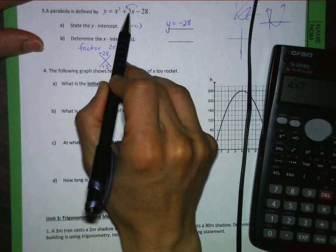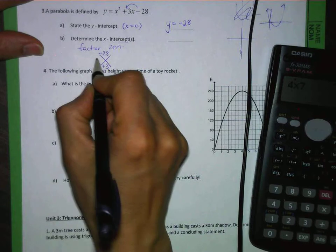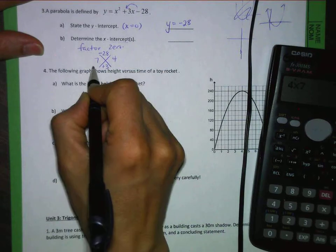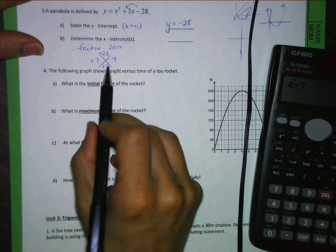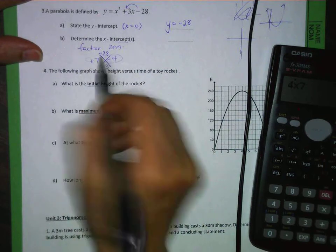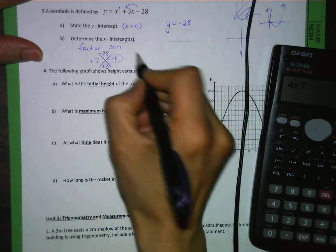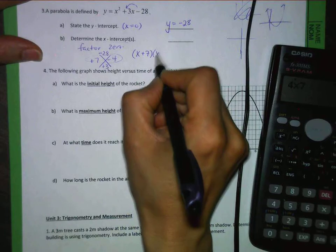So it's going to be 7 and 4, but the 7 is going to be positive and the 4 is going to be negative because they have to add to a positive value. So there are my factors. So it looks like this. x plus 7, x plus 4 are my factors.